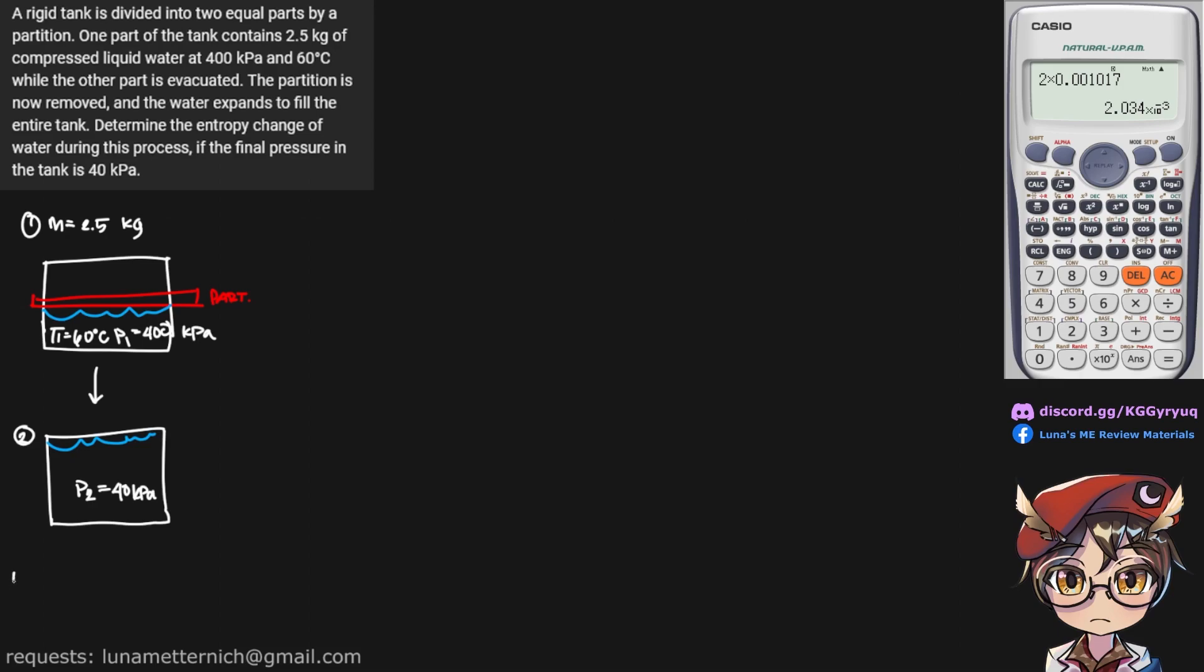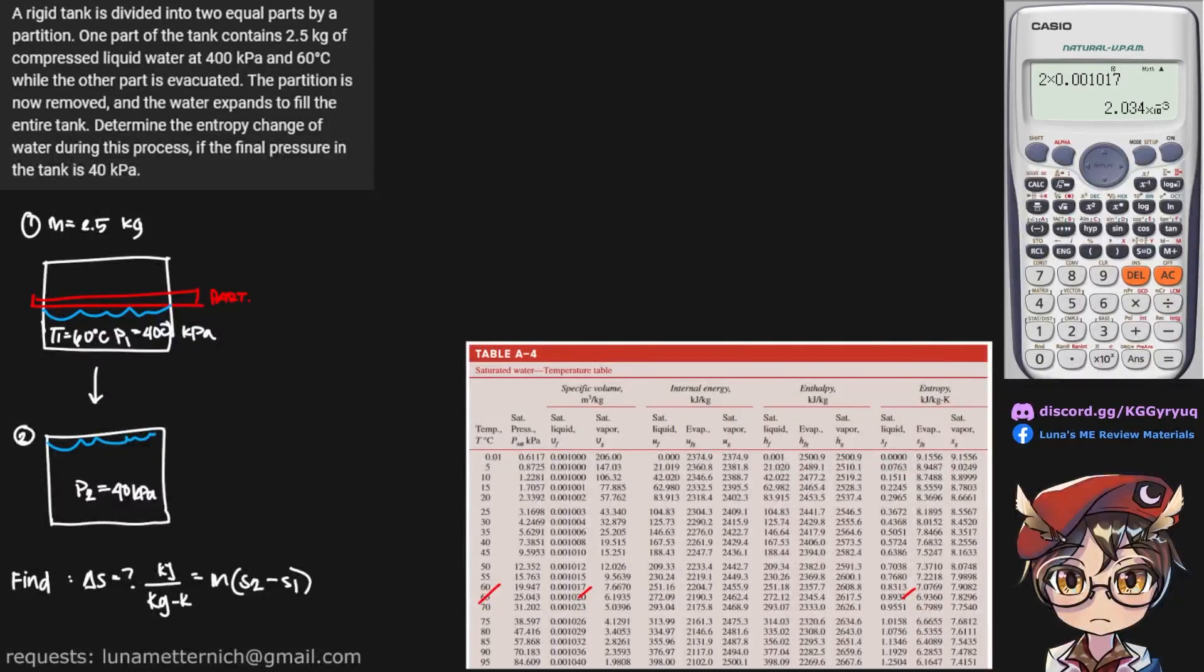And we are asked to find entropy change, presumably in kilojoules per kilogram. And the equation for this is the mass multiplied by the change in entropy. So the first thing we have to do is to check our steam tables. So over here we have temperature of 60. Let's write those down.